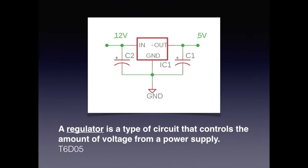You also need to know for the exam that a regulator is a type of circuit that controls the amount of voltage from a power supply. In this example, you have 12 volts going into a single chip regulator and out comes 5 volts. There are filtering capacitors, C1 and C2, which gets rid of any ripple.